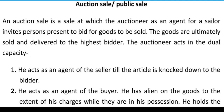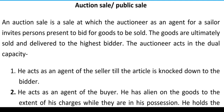An auction is a form of public sale. In an auction, the property is publicly put up for sale, and an auction has a seller and varying numbers of prospective buyers. An auction can be defined as the public sale of property to the highest bidder.